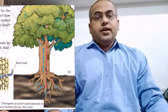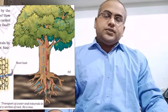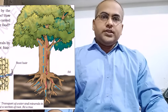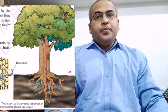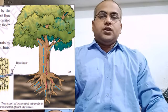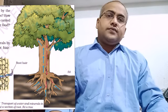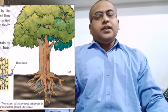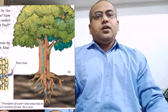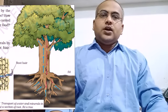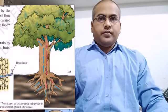In the leaves, food is prepared by the process of photosynthesis. After the preparation of food, this food is transferred to the different parts of the plant by the tissue called phloem. So this is the role of xylem and phloem.